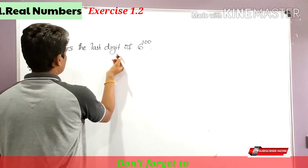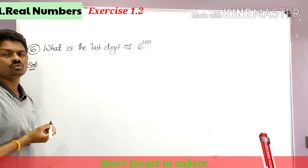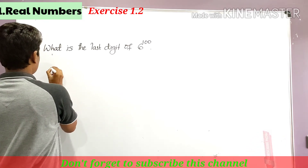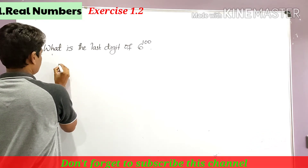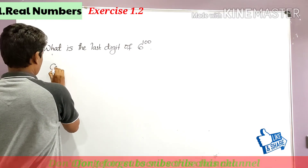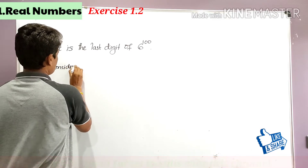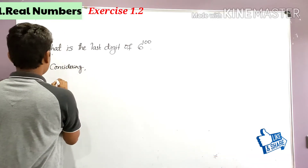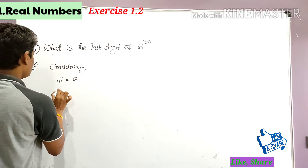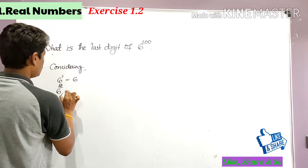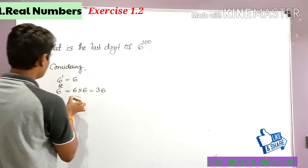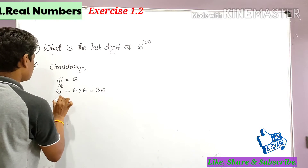To find the last digit of 6 to the power 100, we have to check one by one. So 6 to the power 1 is equal to 6. In the same way, 6 to the power 2 is equal to 6 into 6, which is 36.